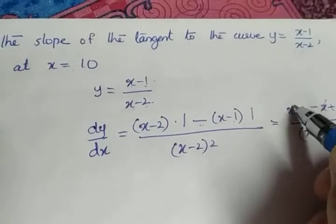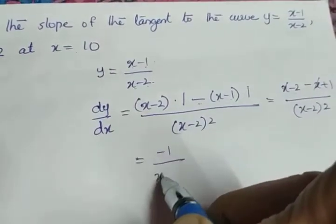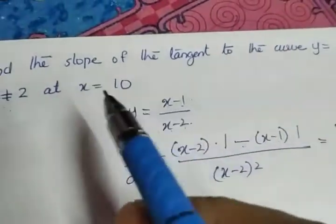What happens? x and minus x get cancelled. Minus 2 plus 1 gives you minus 1. So minus 1 by (x-2) the whole square is the derivative dy/dx.